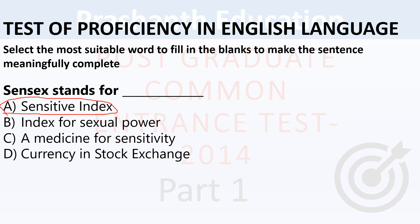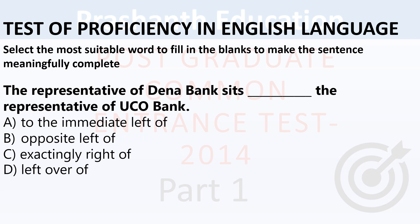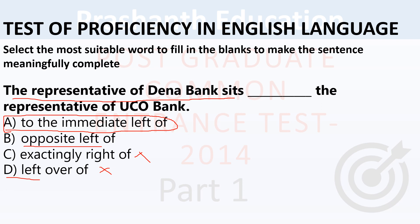Next question: The representative of Dena Bank sits ___ the representative of UCO Bank. Options: to the immediate left of, opposite left of, exactly right, right of. The representative of Dena Bank sits opposite-left of UCO Bank representative. Correct answer is A — to the immediate left of.